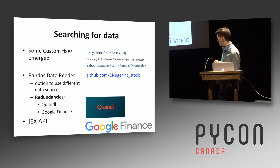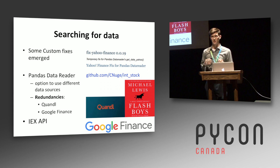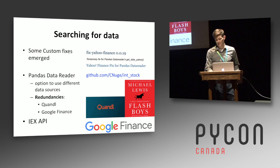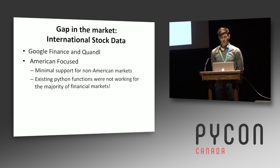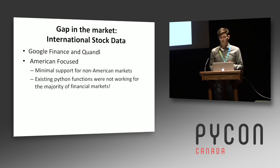Another solution I adopted was using the IEX — the Investors Exchange. If any of you have read Flash Boys by Michael Lewis, that's the exchange developed by the protagonist in response to high-frequency traders. One of the things they did was try to make data freely available to everyone, so they have a nice API that returns historical data in a great JSON format. All of these solutions work well, but there is a certain gap: they're focusing on American stock markets. If you're looking at stocks on the NYSE, they're well supported, but for people like myself trying to query data off the Toronto Stock Exchange, or markets around the world, these methods fall short.